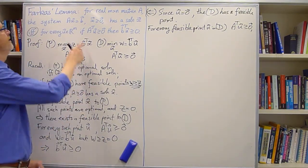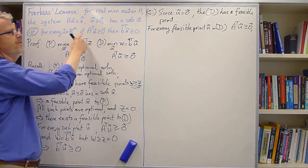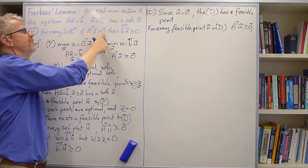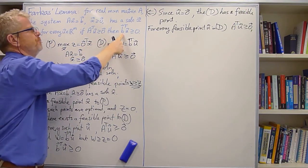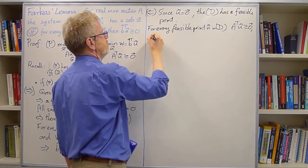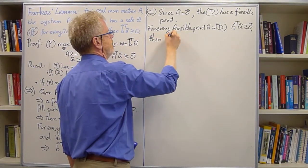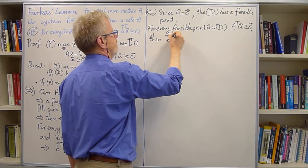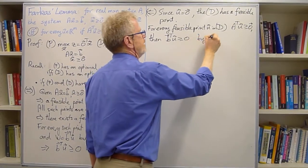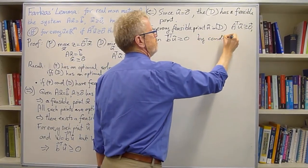But now, remember we're going from this statement backwards. And this statement says if ever A transpose U is bigger than or equal to 0, then it follows that B transpose U is bigger than or equal to 0. By, you know, that condition that we're working from.